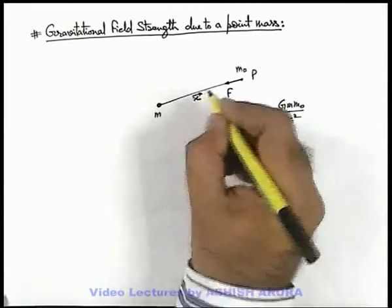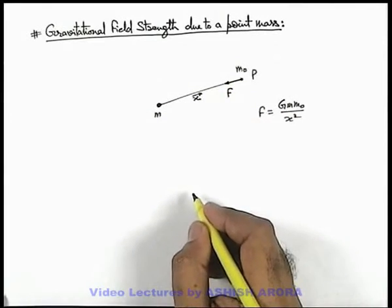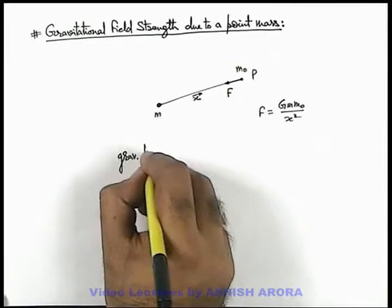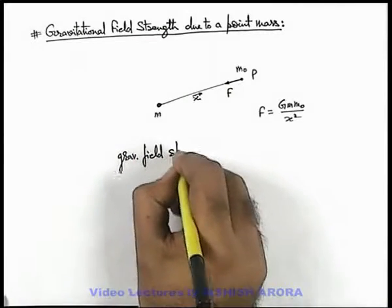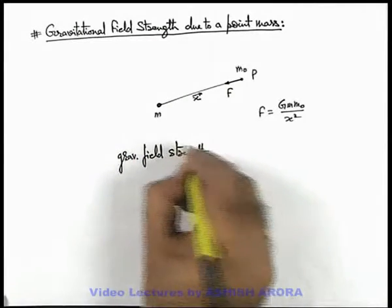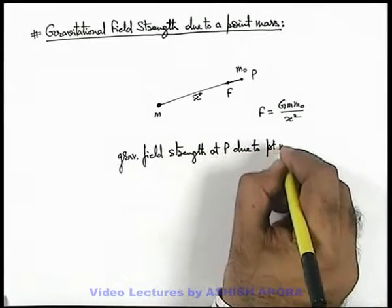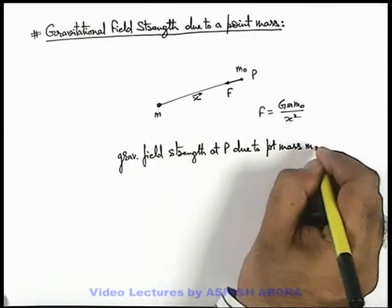This x can be written as position vector of point p. So in this situation we can write gravitational field strength at p due to point mass m is...